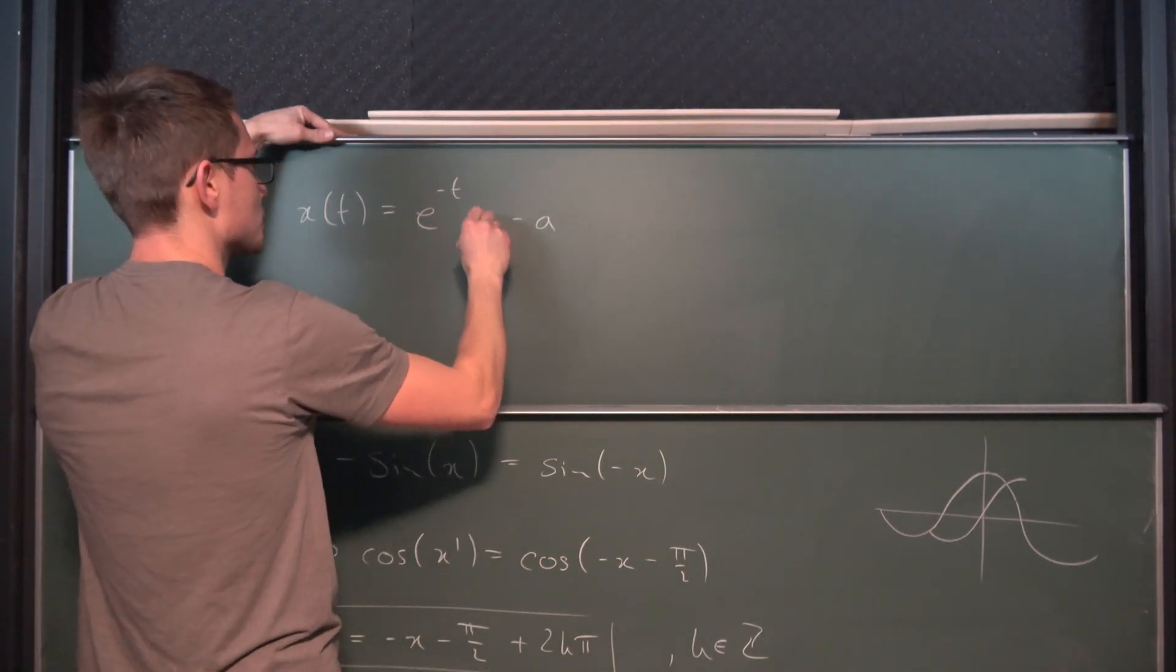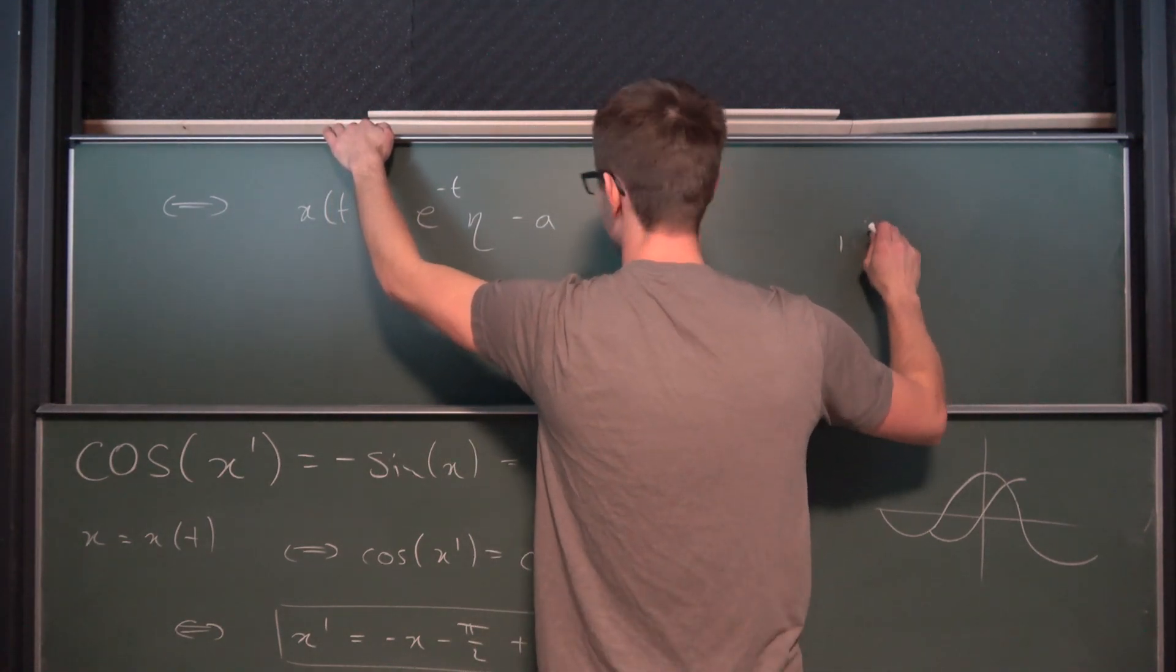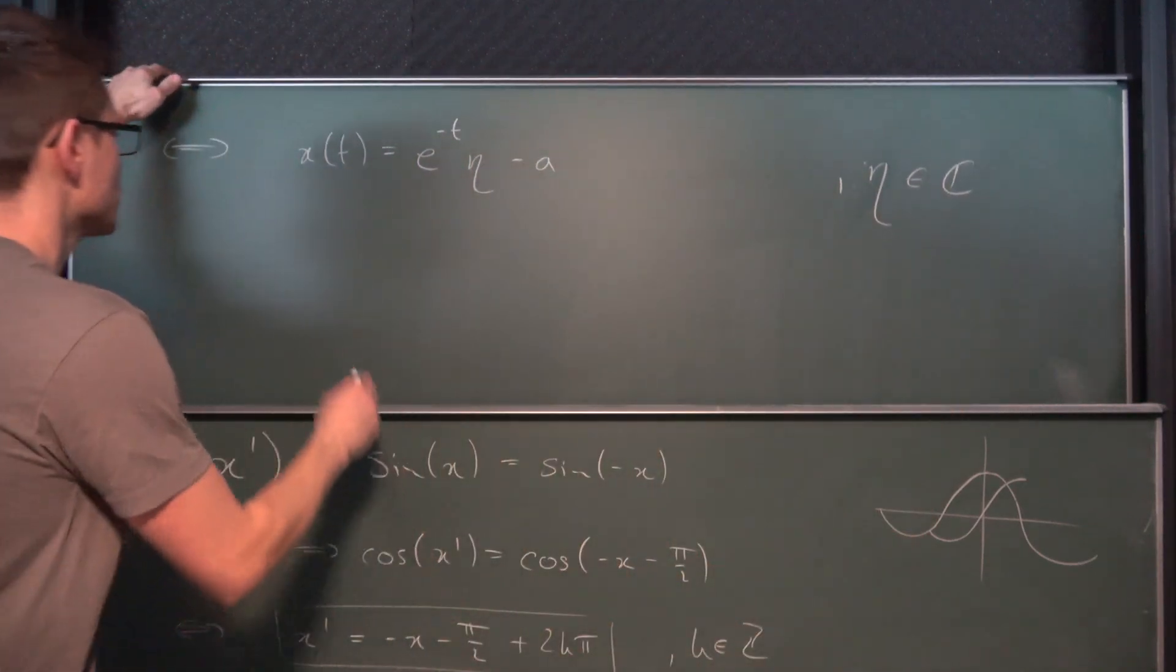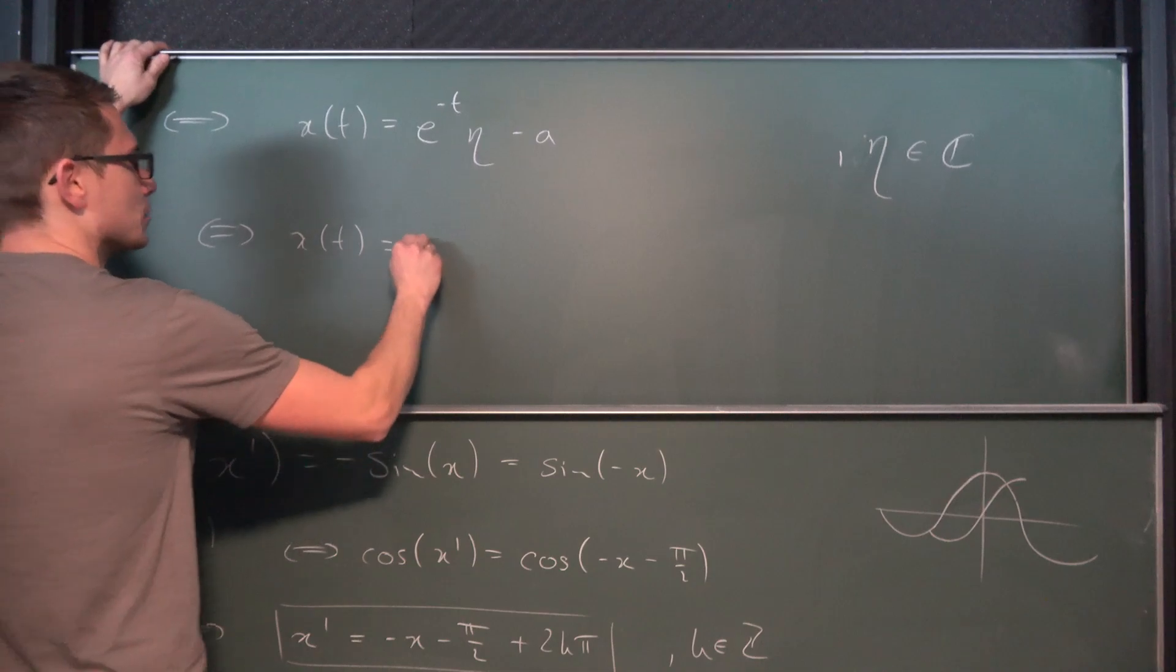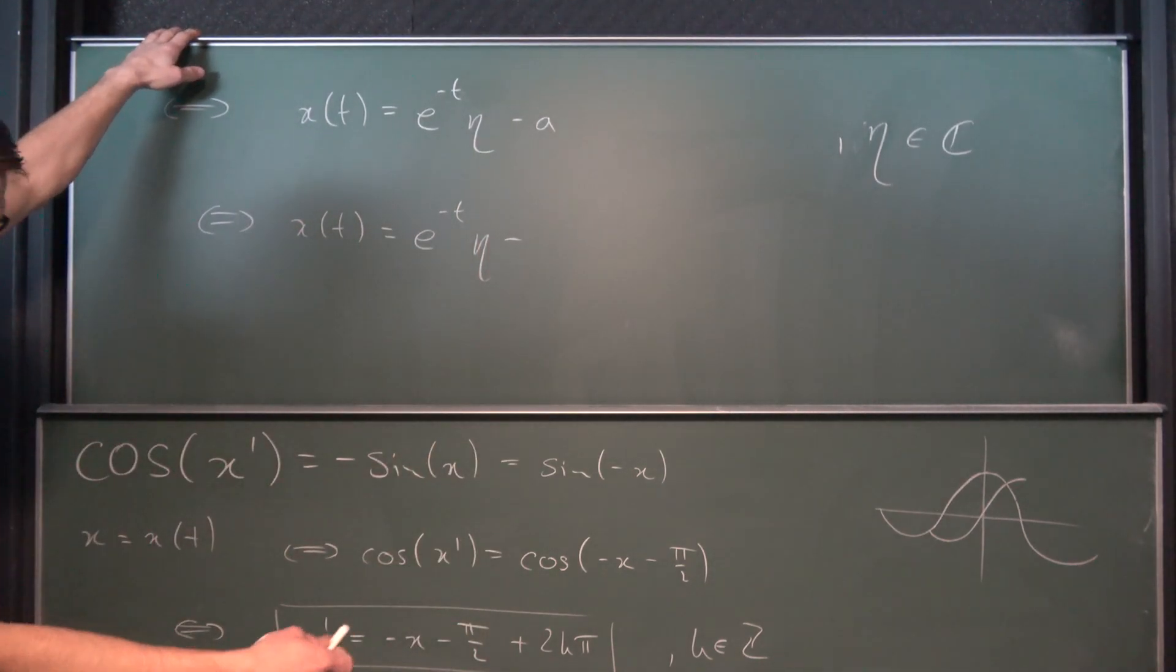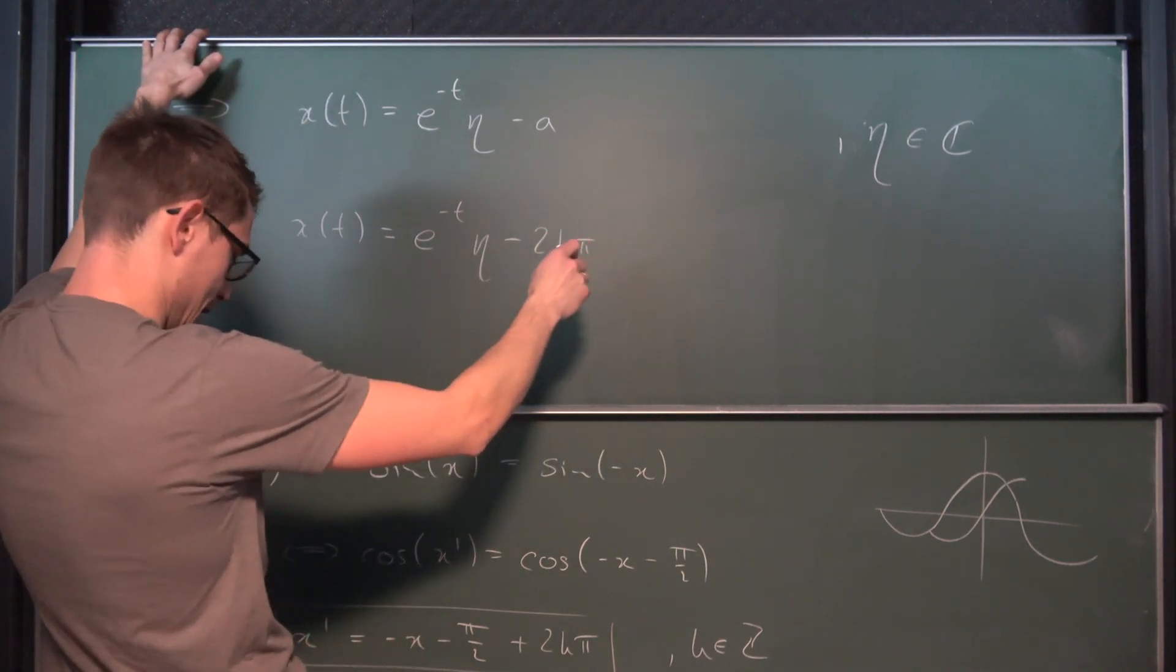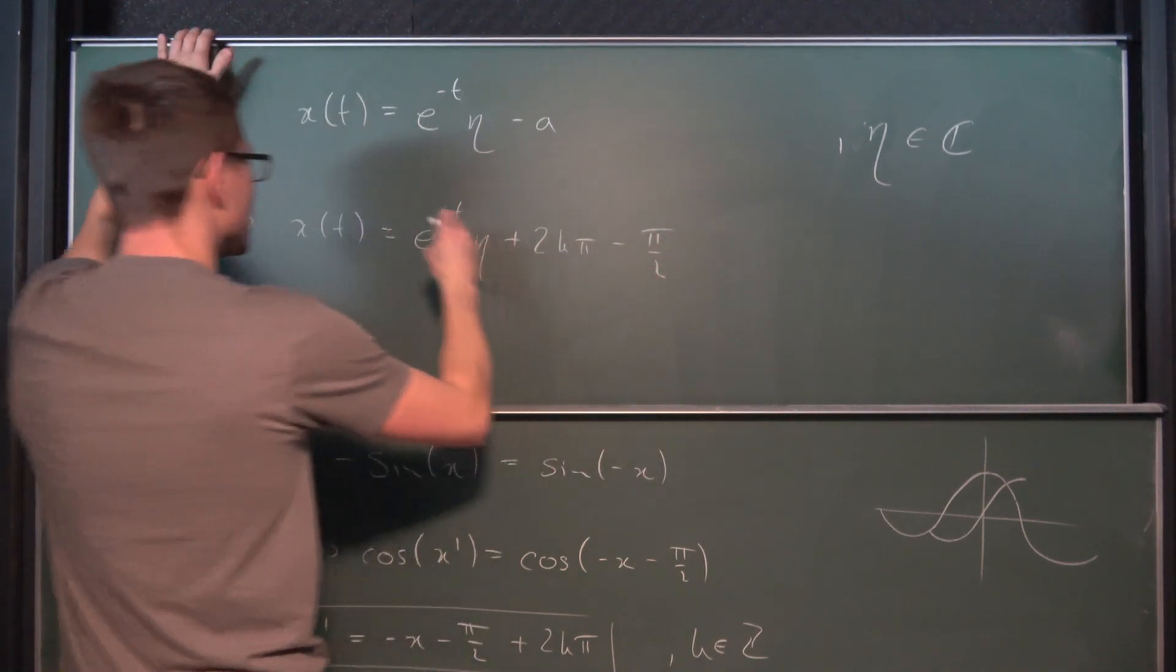And I'm going to call this constant eta, where eta is element of the complex numbers. So overall x with respect to t is equal to e to the negative t times eta minus and a has been defined as 2k pi, and then no plus 2k pi minus pi over 2. This right here is the solution to our differential equation.